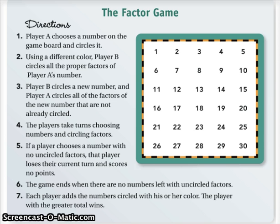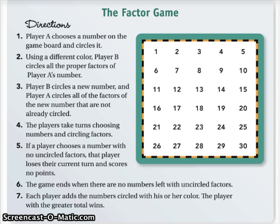Player A chooses a number on the game board and circles it. Using a different color, Player B circles all the proper factors of Player A's number. Proper factors are factors of a number that do not include the number itself, and we'll look at some examples of that when we start playing the game.